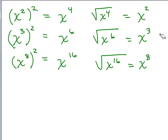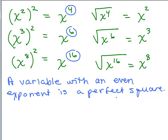Let's analyze the pattern: when you square x squared you get x to the fourth, x cubed squared gives x to the sixth, and x to the eighth squared gives x to the sixteenth. Using the laws of exponents, you took the original exponent and multiplied by 2. So when you square a variable to some exponent, you end up with an even exponent. X to the fourth, x to the sixth, x to the sixteenth are all even exponents — that's because multiplying any number by 2 gives an even result.